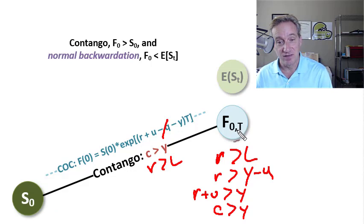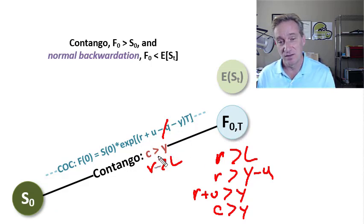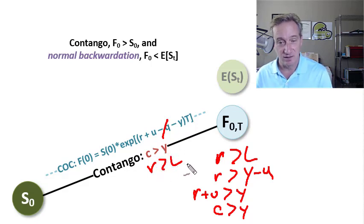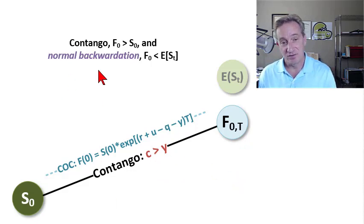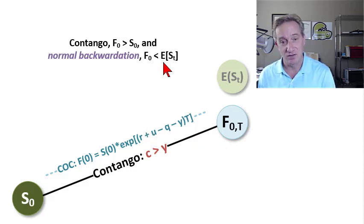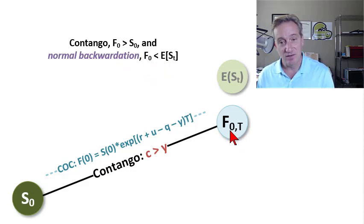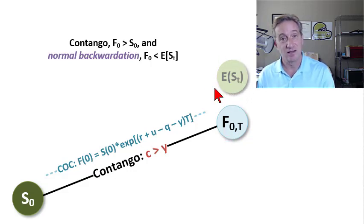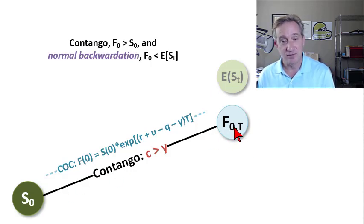Just to recap: we observe the contango, and with the contango we would tend to infer that the cost of carry is greater than the convenience yield, or that the risk-free rate is greater than the lease rate. Now, unlike the contango, which is observed, the normal backwardation is not observed — because normal backwardation is about the relationship of the futures price to the expected future spot price. It's a common confusion to new learners; they think they should be the same, but the futures price is what we observe today.